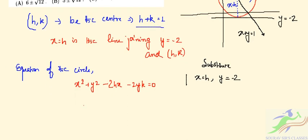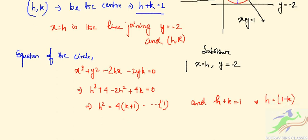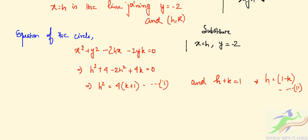Substituting x = h and y = -2, we get: h² + 4 - 2h² + 4k = 0, which simplifies to h² = 4(k + 1). Let this be equation 1. From h + k = 1, we get h = 1 - k. Let this be equation 2.